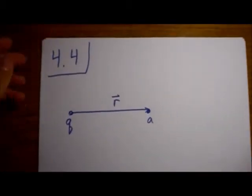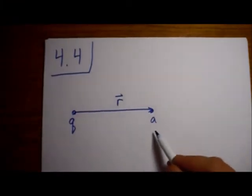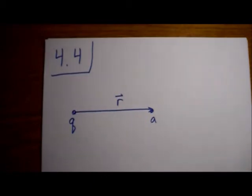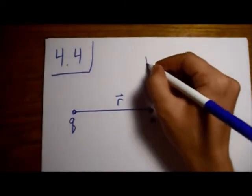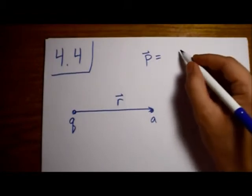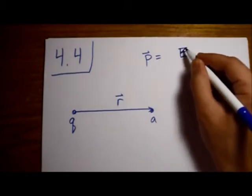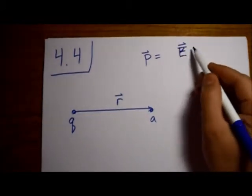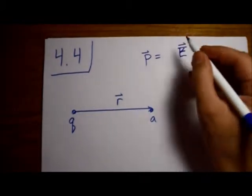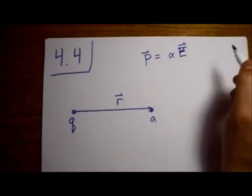Alright, so this is Griffith's Electrodynamics Problem 4.4. What we've got here is an atom of electric polarizability, which we'll call alpha. So what that means is that our dipole moment of this atom is linearly proportional to the external electric field, and the constant of proportionality is alpha.